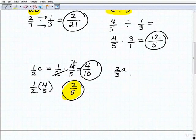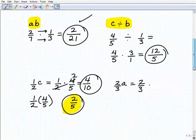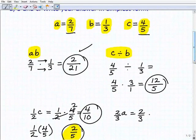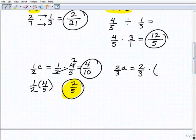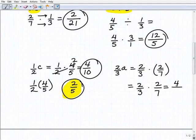Our final problem is going to be two thirds times a. So that once again, this is a product, two thirds times a. So two thirds times our a value, which was two sevenths. So two thirds times two sevenths is going to be equal to two thirds times two over seven. And when I do that, this is going to be four over 21.